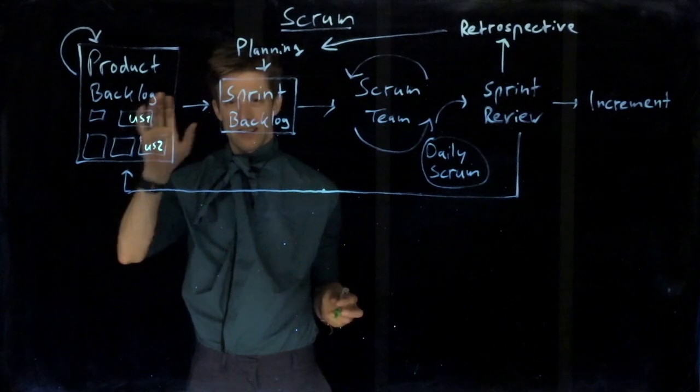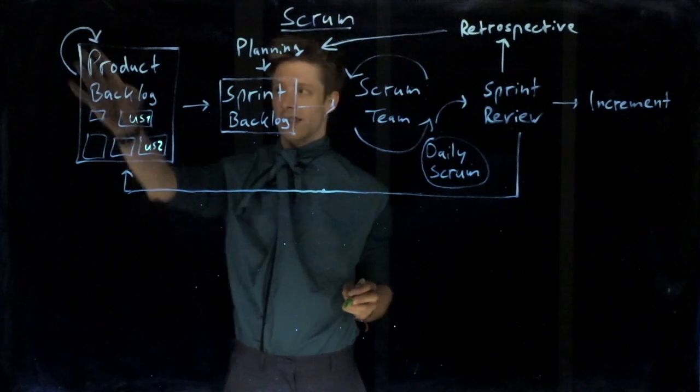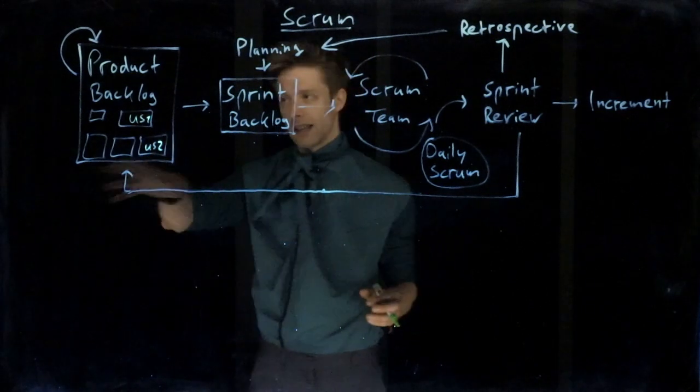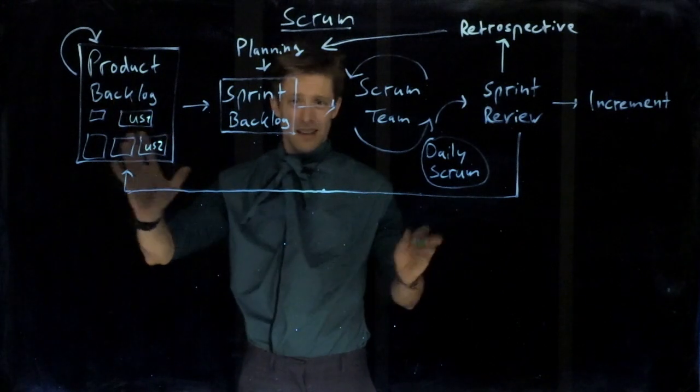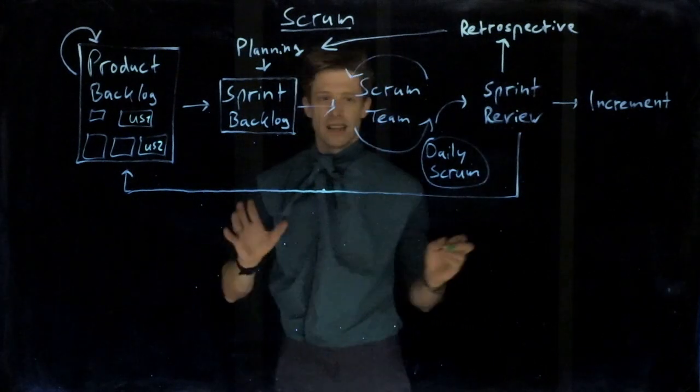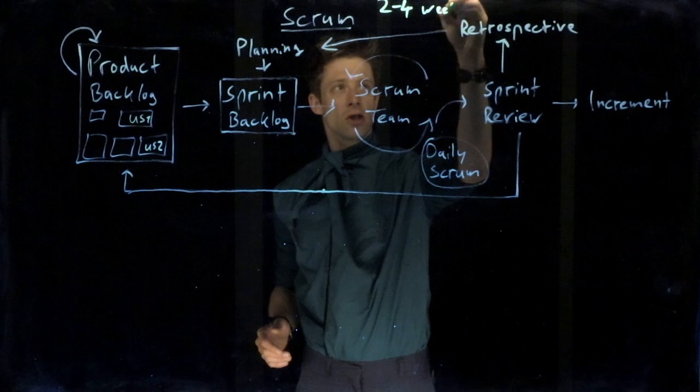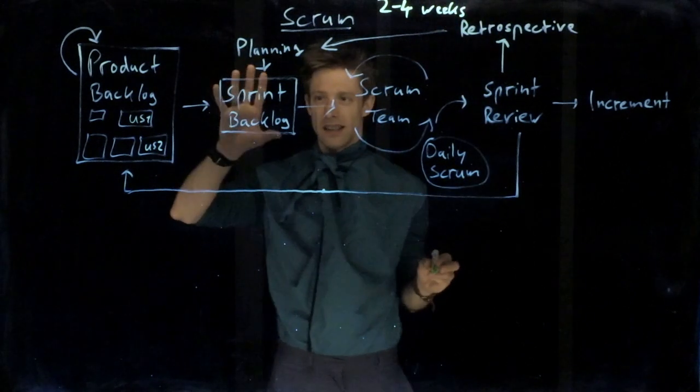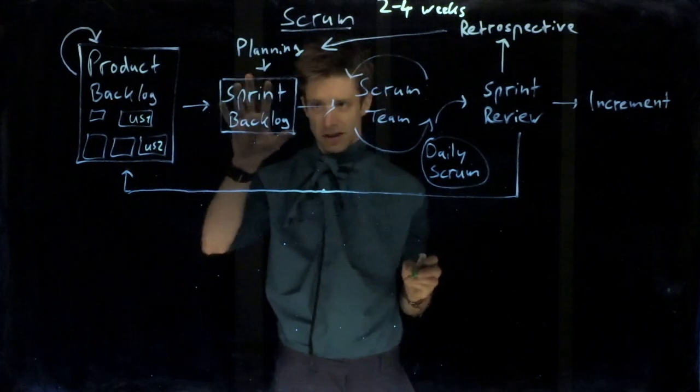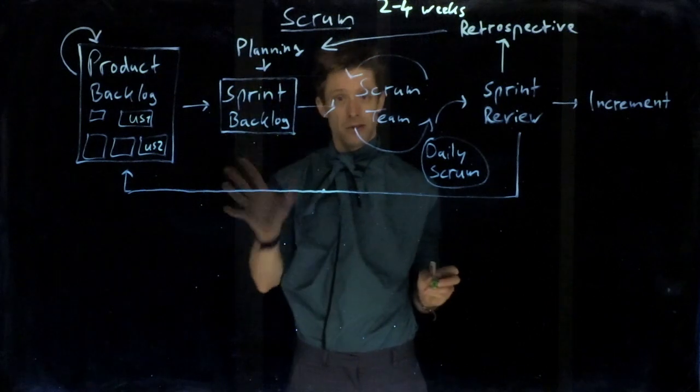This Product Backlog gets populated in the beginning, so you just try to get all sorts of things in there. Of course, it's flexible. That's indicated by the arrows here. It can change over time, and since we are in an agile development, we expect change, so we expect this Product Backlog to change. What happens then is that we have increments that, in our case, are called sprints. Each sprint is about two to four weeks in Scrum. In the beginning of the sprint, we take items from the Product Backlog into our Sprint Backlog.